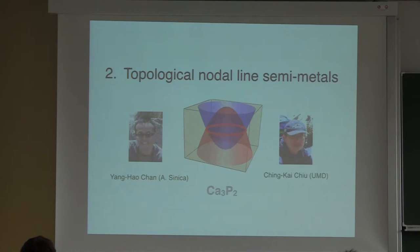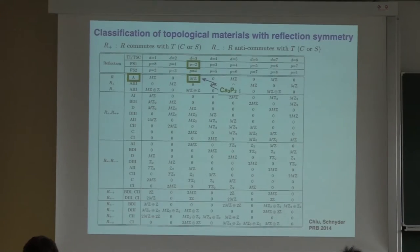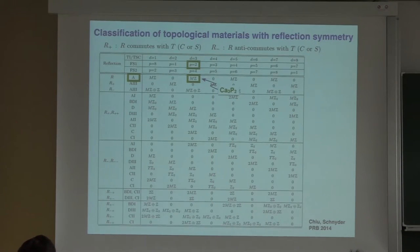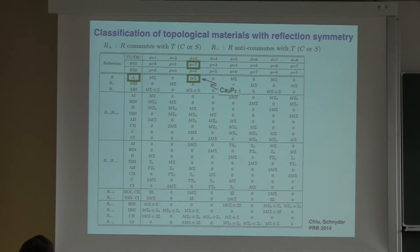The second example is calcium-3 phosphorus-2, which we heard about in the first talk this morning. This is a semi-metallic system where the Dirac ring is mapped onto itself by time-reversal symmetry, corresponding to case FS1. It has co-dimension 2 — the total dimension minus the dimension of the Fermi surface: total dimension 3 minus the 1-dimensional Dirac line equals 2. So we go to the entry p equals 2 in the classification table, and it turns out the relevant symmetry is reflection, giving a mirror number that protects this Dirac line.